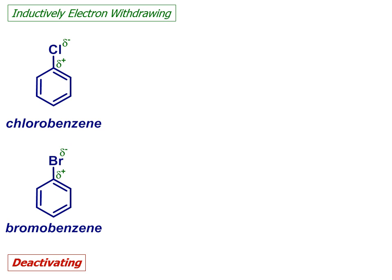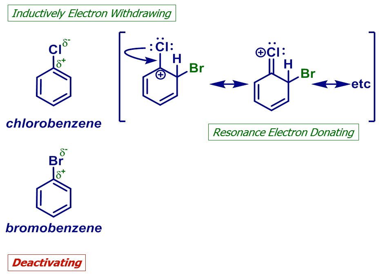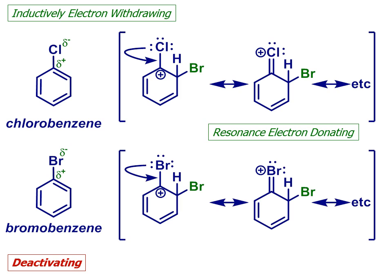However if electrophilic attack does occur, which it can do if enough energy is put into the system, then resonance effects come into play. Once there is a positive charge in the ring to be stabilised, then a chloro or bromo substituent can and will donate one of its lone pairs via resonance, as shown here.